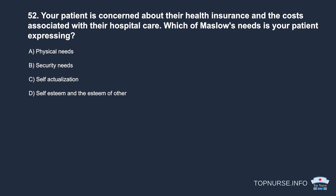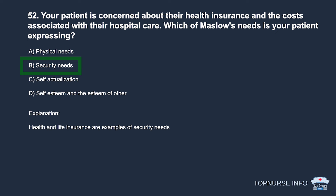Question 52: Your patient is concerned about their health insurance and the costs associated with hospital care. Which of Maslow's needs is your patient expressing? a. Physical needs. b. Security needs. c. Self-actualization. d. Self-esteem. Correct answer: b. Security needs. Health and life insurance are examples of security needs.